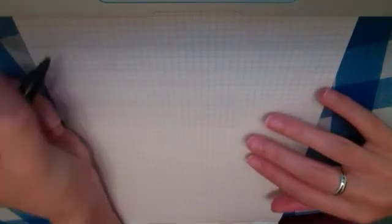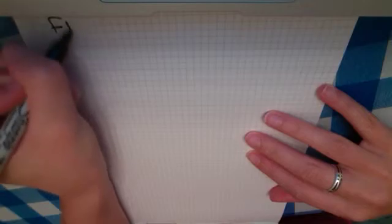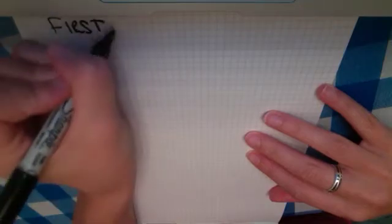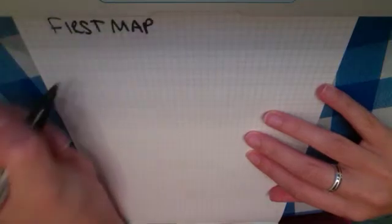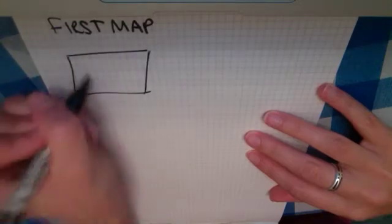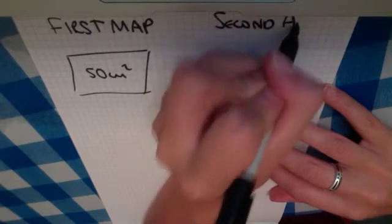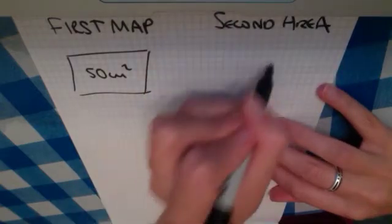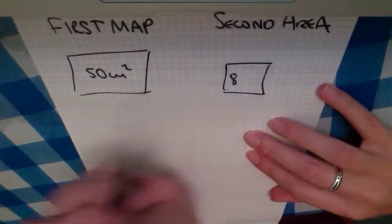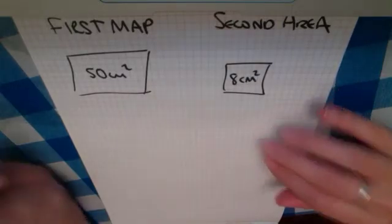What I like to do usually is to draw a picture of this. It just helps me to visualize what's going on. So the first map has an area of 50 centimetres squared, and the second map is of exactly the same place, same area, except it only uses 8 centimetres squared to show the same area.